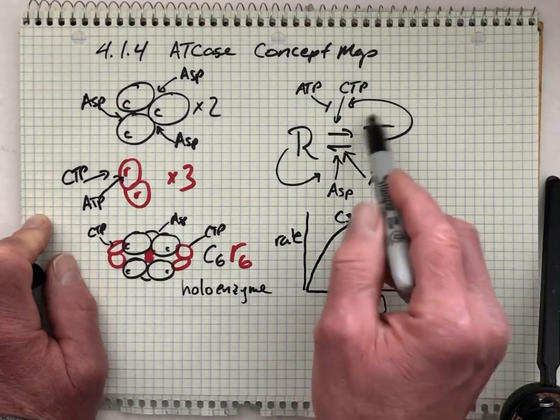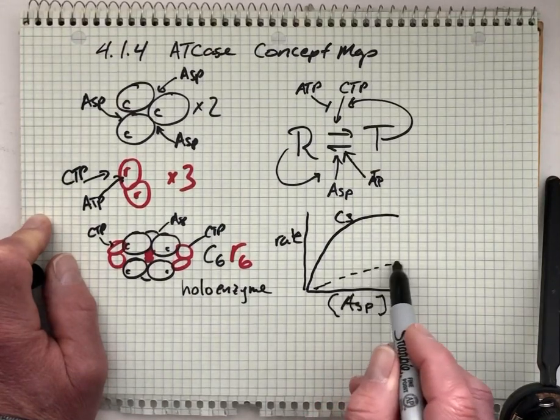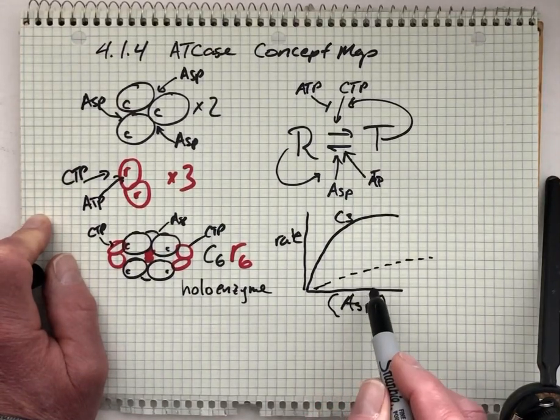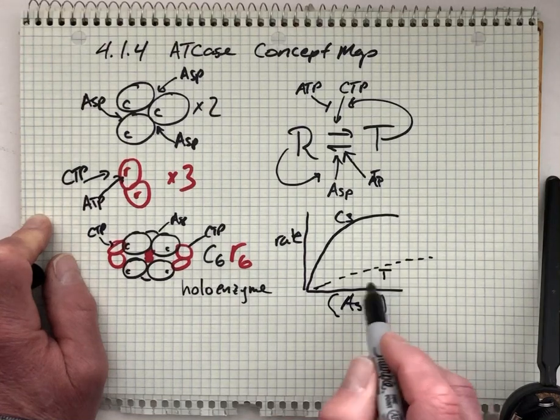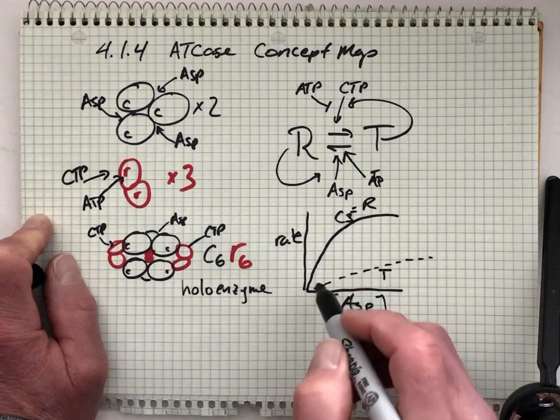If we could freeze the enzyme in the T form, it would have a much more difficult time binding aspartate. This is the T, but we cannot isolate that in the lab. So it's just a hypothetical curve.